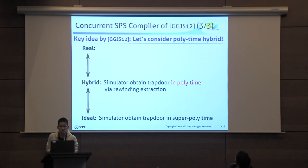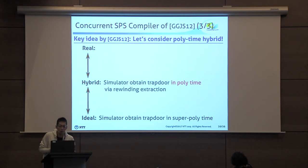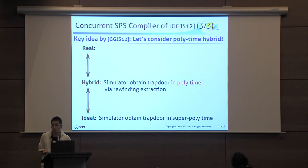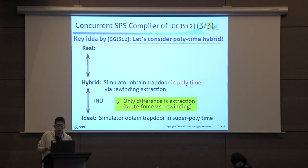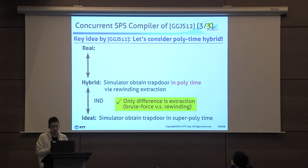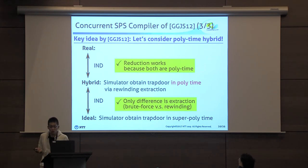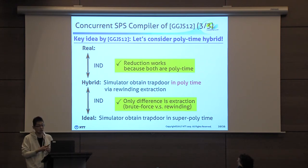The key idea of GGJS is to overcome this problem by considering a polynomial-time hybrid between the real world and the ideal world. In particular, they consider a hybrid experiment in which the simulator obtains the trapdoor in polynomial time by using a rewinding extraction rather than brute force extraction. By considering such a hybrid, we can first show that the ideal world is indistinguishable from the hybrid, because the only difference is the way to extract the trapdoor and the same trapdoor is extracted in both. We can also show that the real world is indistinguishable from the hybrid, and a key point is that both the real world and hybrid run in polynomial time, so we can design the reduction in a standard way.